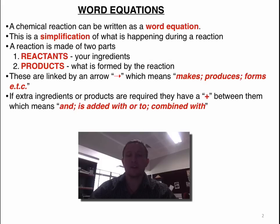On the right-hand side, we put the products. So that is what's formed after the reaction. These are joined by an arrow. The arrow can replace words such as makes, produces, comes from, forms, etc.